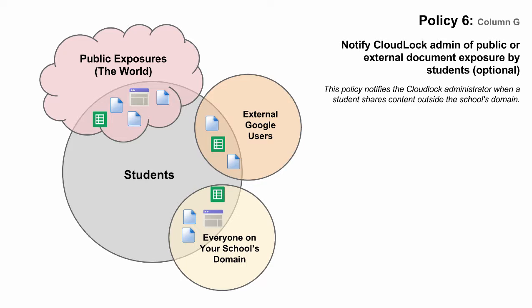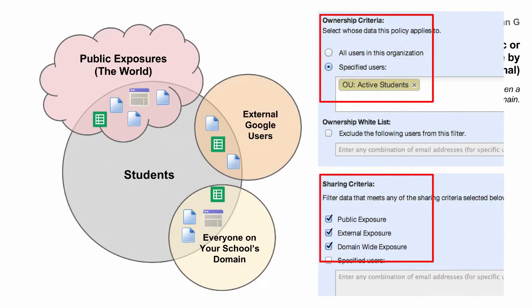The sixth and last policy is an optional recommendation for schools that would like to add an additional level of granularity to how they monitor student activity in Google Apps. This policy sends a daily notification email to the CloudLock administrator, or any other school leader of your choosing, with a summary report of documents or sites owned by students that are public on the web, shared externally, or accessible to anyone on the domain. This policy gives you the ability to peer into student-owned content that is accessible to many people inside and outside of your domain, so you can identify and act on inappropriate activity as needed.